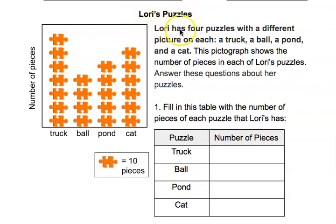Lori has four puzzles with a different picture on each: a truck, a ball, a pond, and a cat. This pictograph shows the number of pieces in each of Lori's puzzles.